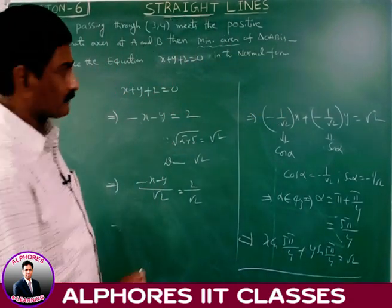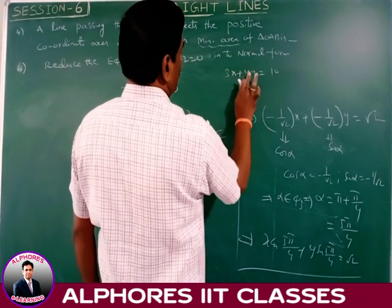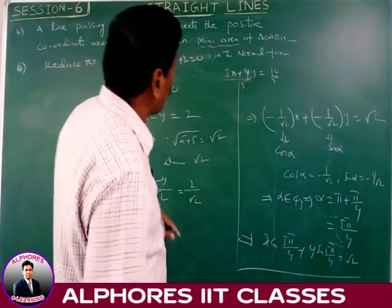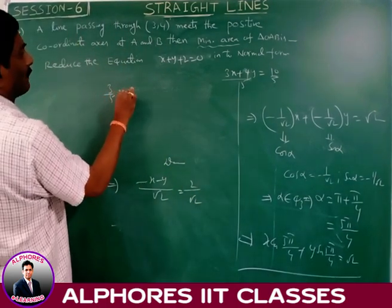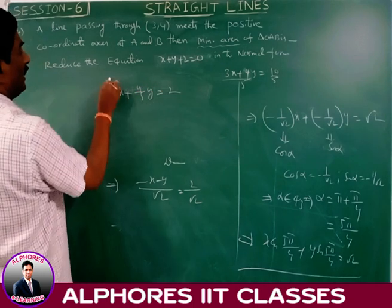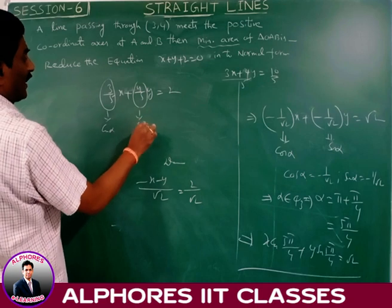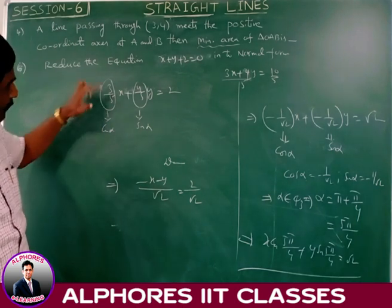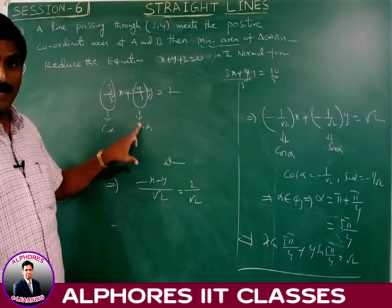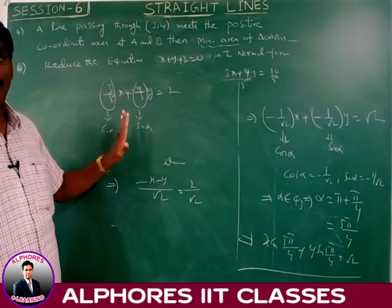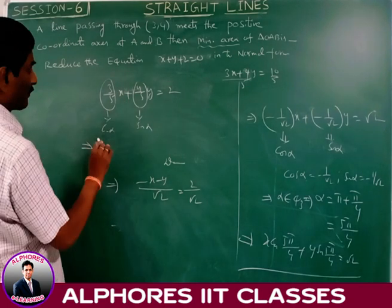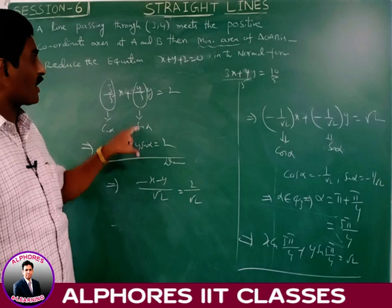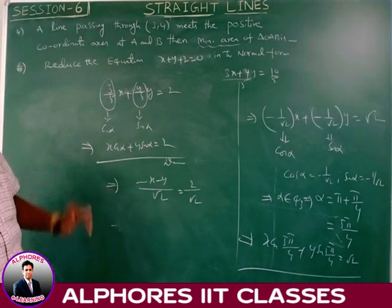For a line like 3x plus 4y equals 10, divide both sides by √(9+16) equals 5. This gives (3/5)x plus (4/5)y equals 2, which is x·cos α plus y·sin α equals 2, where cos α equals 3/5 and sin α equals 4/5. In this case we cannot find an exact standard angle for α, so the normal form is stated as x·cos α plus y·sin α equals 2 where cos α equals 3/5 and sin α equals 4/5.